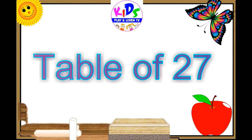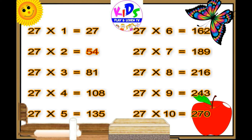Let's repeat. 27 ones are 27. 27 twos are 54. 27 threes are 81. 27 fours are 108. 27 fives are 135. 27 sixes are 162.